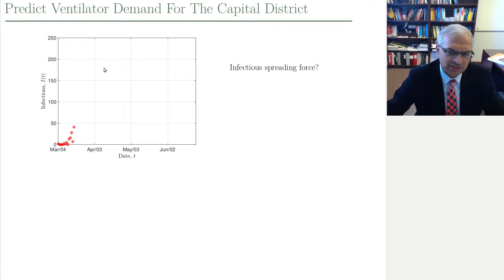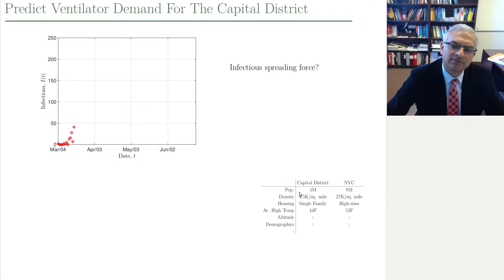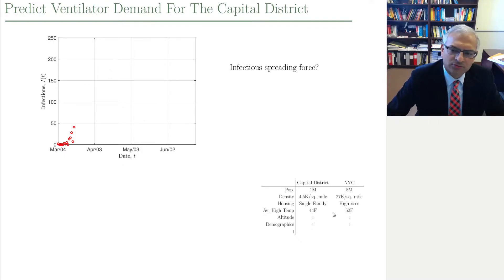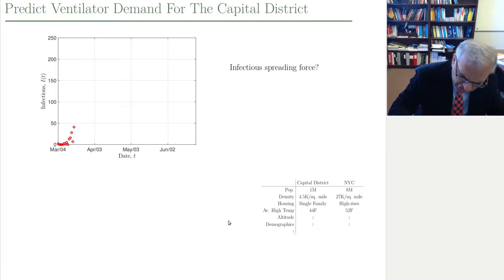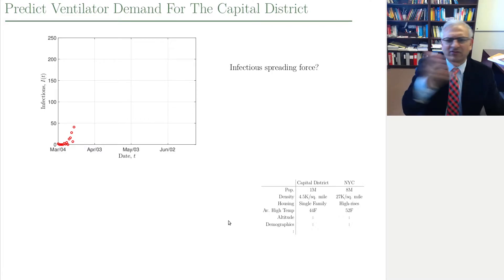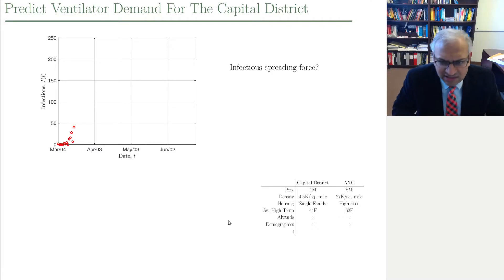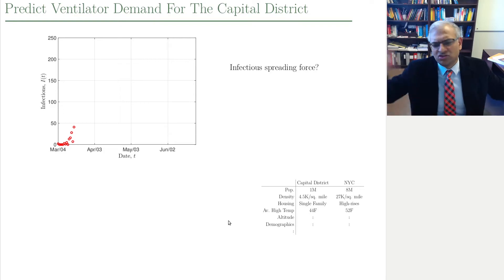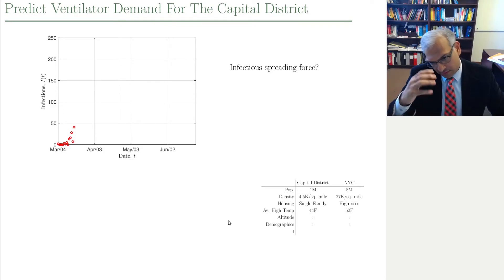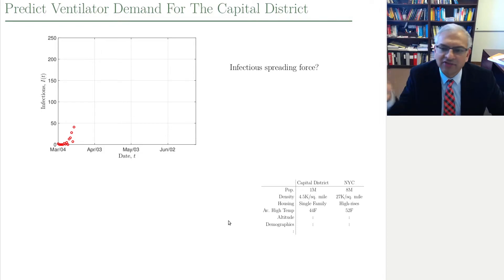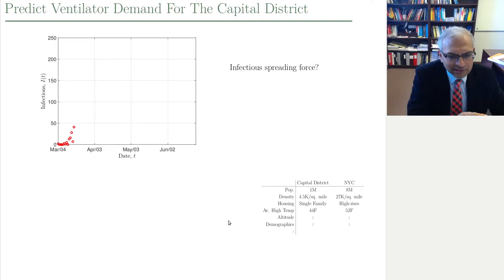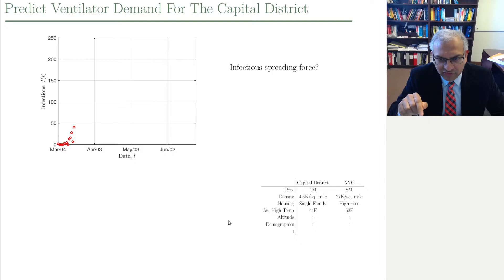Let's compare two different regions — New York City and the capital district. New York City has eight times the population, much denser, different style of housing. Apartments versus single family units — in an apartment, you come home, you're touching knobs, you're touching elevator buttons. Everyone's been touching these things. The infection is going rapid. The punchline is that this infection is going to spread differently in different regions, and the capital district and New York City are going to behave very differently.